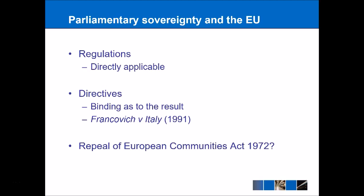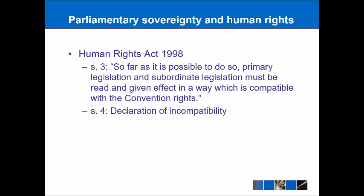Now let's consider the role of parliamentary sovereignty in relation to human rights. The main piece of legislation is the Human Rights Act 1998. Section 3 says that primary legislation needs to be interpreted insofar as it is possible to do so in a way that is compatible with convention rights. This could be seen as a limitation on parliamentary sovereignty because the courts will always try and interpret Acts of Parliament in a way that is consistent with the UK's international obligations under the convention.